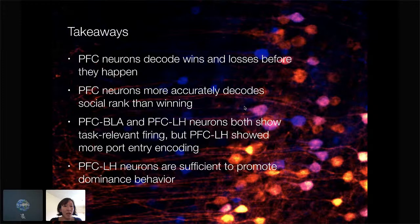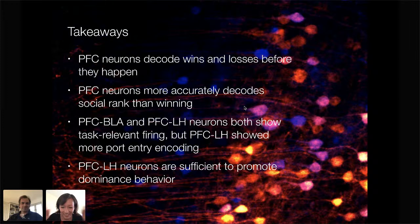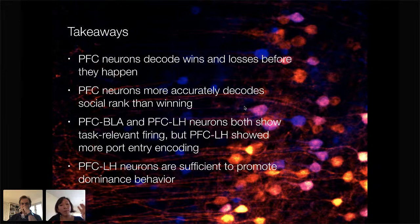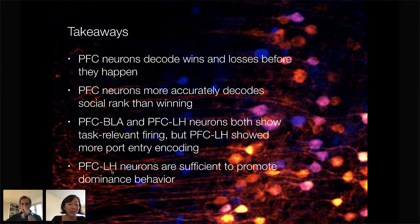With that, I'll summarize the takeaways. Did pretty good on time for my first run through. PFC neurons decode wins and losses before they even happen, before the trial even begins. PFC neurons more accurately decode social rank than winning — which to me was just exciting. Both PFC-BLA and PFC-LH neurons show task-relevant firing, but PFC-LH neurons showed more port entry encoding during the reward competition task.